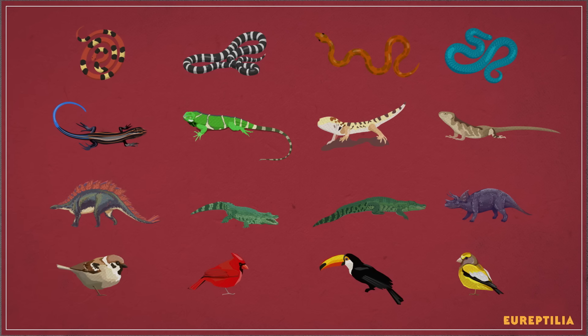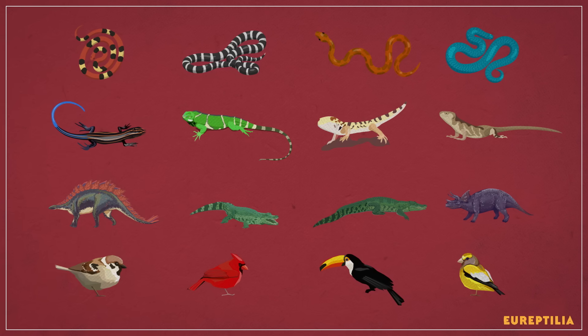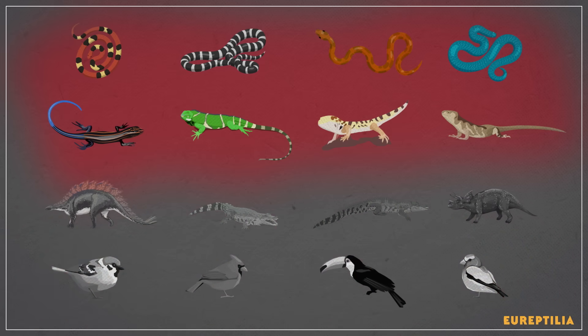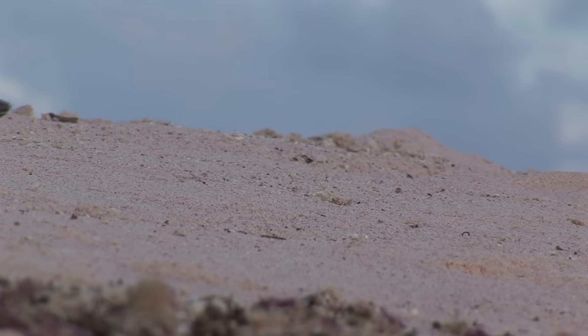Turtles' exact place among the eureptiles isn't settled either. A lot of researchers think they're more closely related to the clade that includes animals like crocodiles and birds. But others argue that they're closer to a different group that includes lizards and snakes. Hopefully it won't take another 130 years for an answer to that debate.